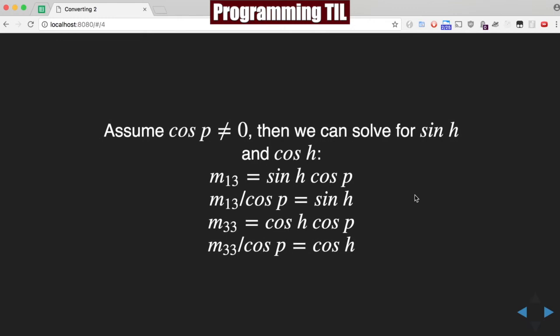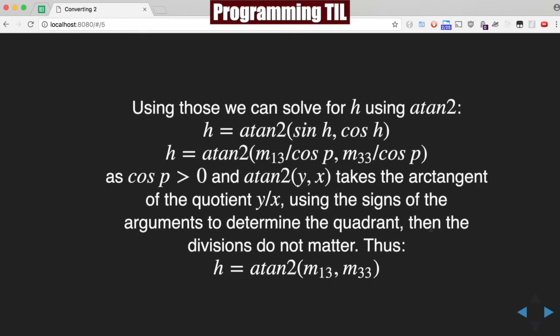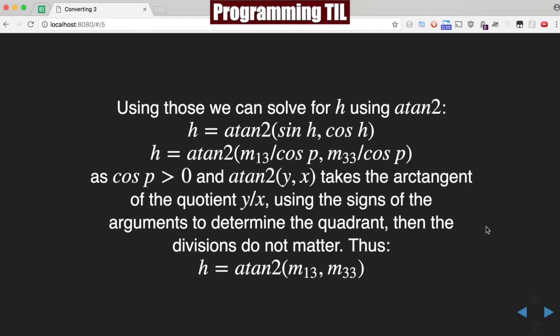If we assume that cosine of P is not zero, then we can solve for sine of H and cosine of H. As you can see here from M13 and M33, M13 over cosine P equals sine H and M33 over cosine P equals cosine H. Here we can use atan2, which is the arctangent of sine H and cosine H.